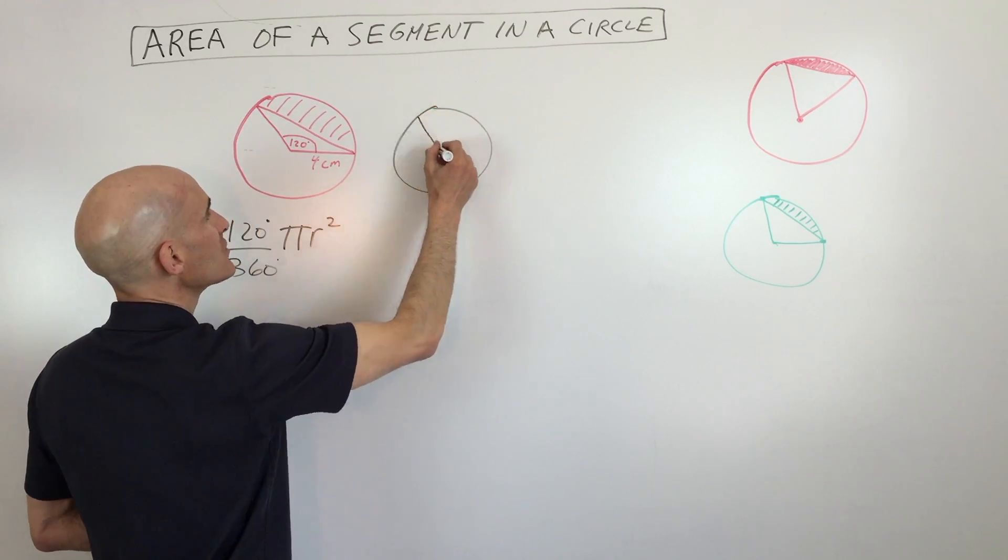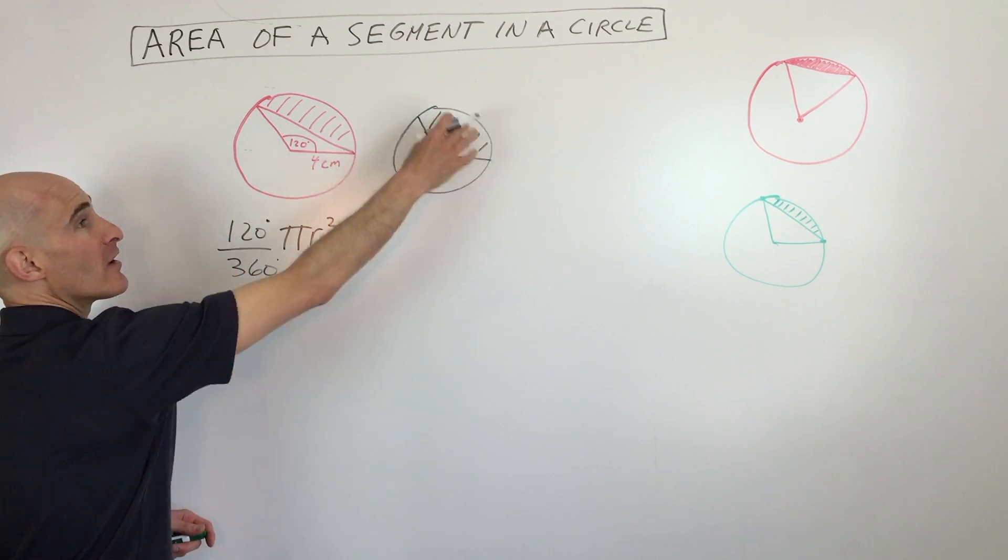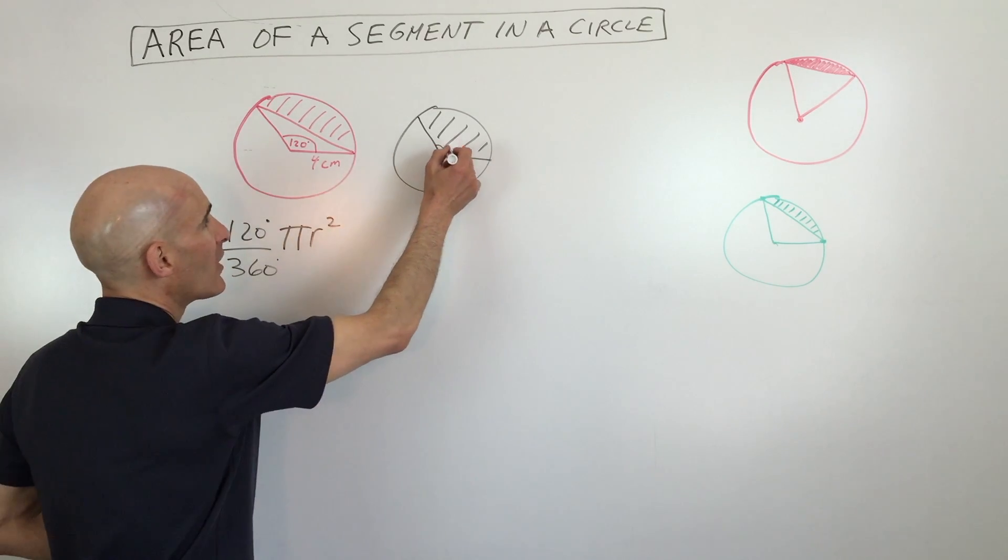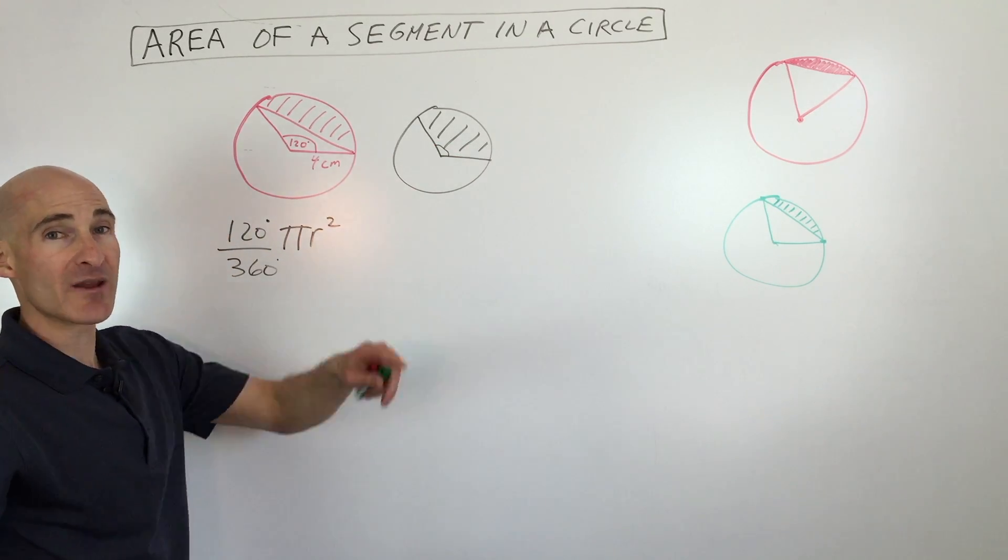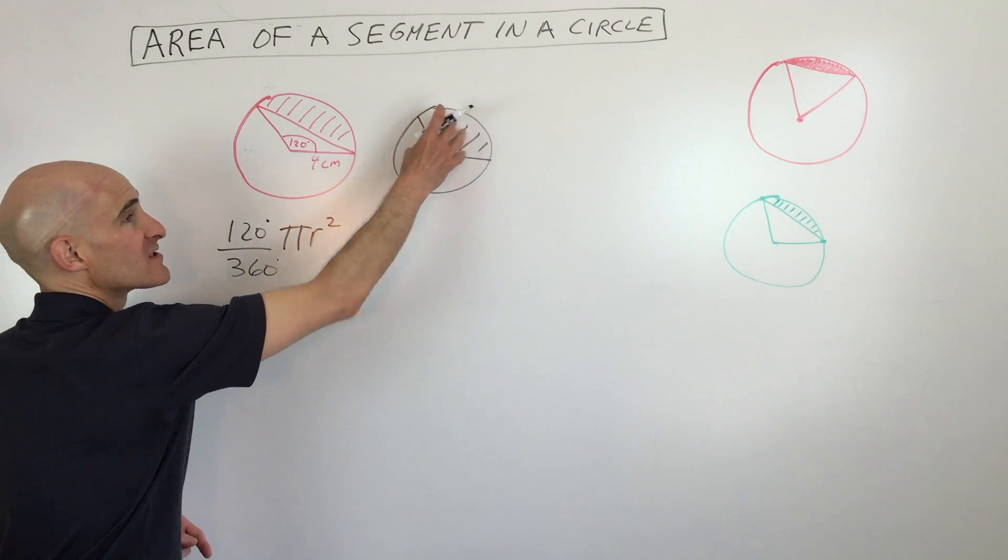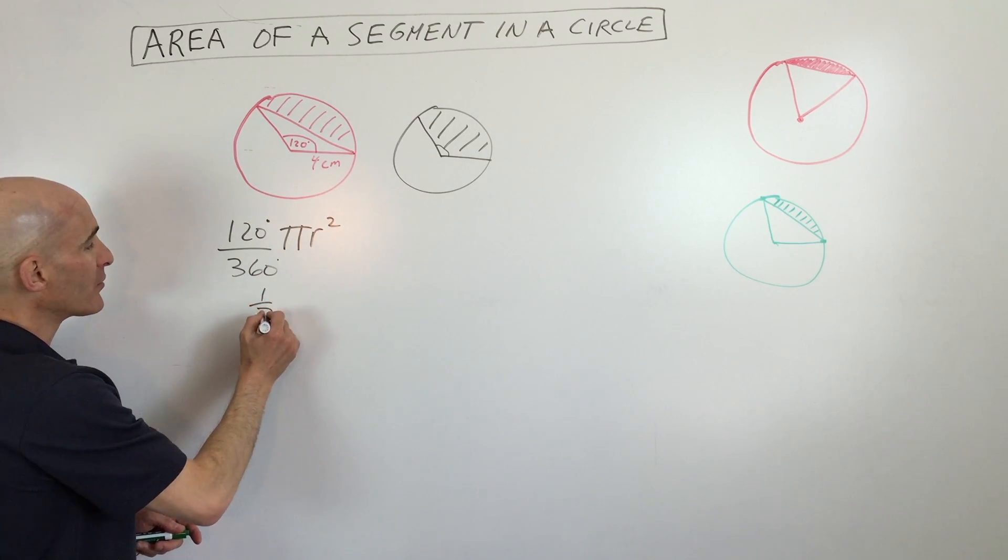Well, this region right here is actually one-third of the entire area of the circle. So I'm just taking the ratio of this central angle, 120 degrees, divided by the whole circle, 360 degrees, to get the area of just this section, that sector. If we continue that on, we have here one-third.